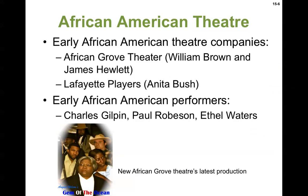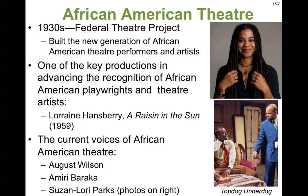Early African-American theater companies include the African Grove Theater in the early 20th century and the Lafayette Players. The new African Grove Theater's latest production is called Gem of the Ocean by August Wilson. The Federal Theater Project in the 1930s helped build a new generation of African-American theater performers and artists. And of course, Lorraine Hansberry was one of the key playwrights — A Raisin in the Sun in 1959, a very tumultuous time — writing about issues that were very important, and people started to notice.